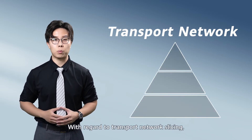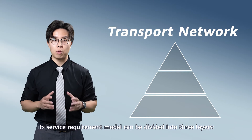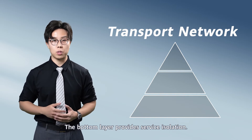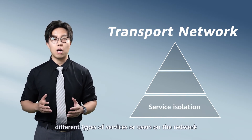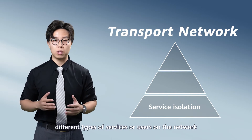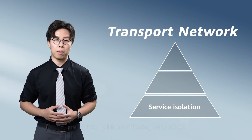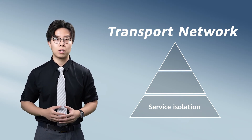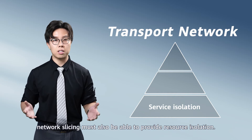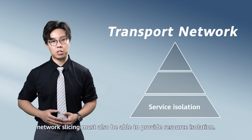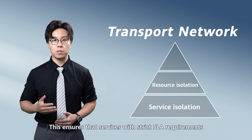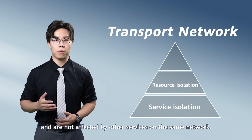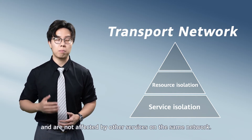With regard to transport network slicing, its service requirement model can be divided into three layers. The bottom layer provides service isolation. At this layer, different types of services or users on the network are isolated without affecting each other — this is something we traditionally use VPN technologies for. But beyond this, network slicing must also be able to provide resource isolation. This ensures that services with strict SLA requirements are assigned exclusive resources and are not affected by other services on the same network.